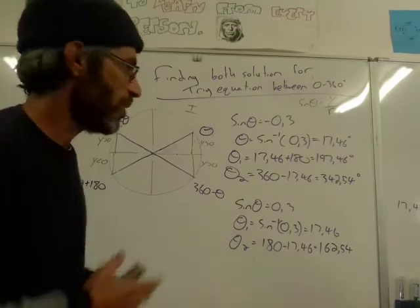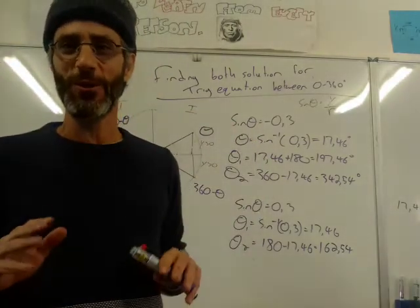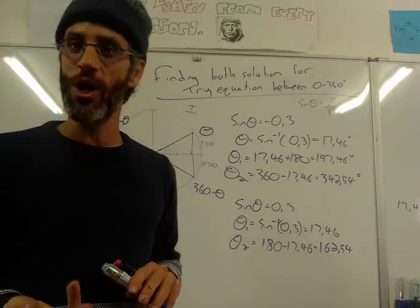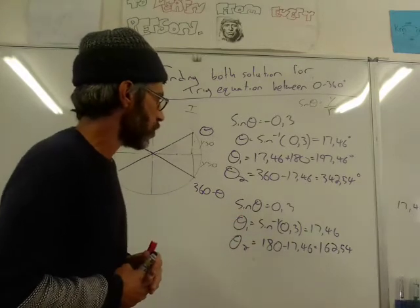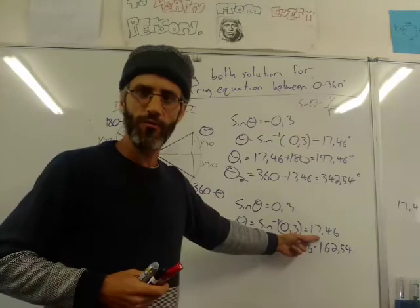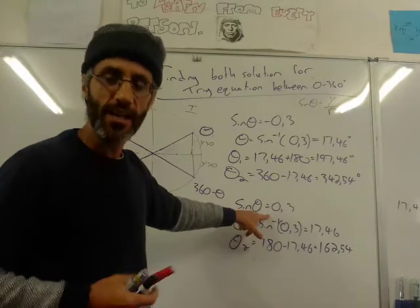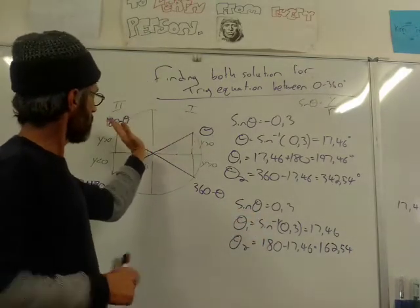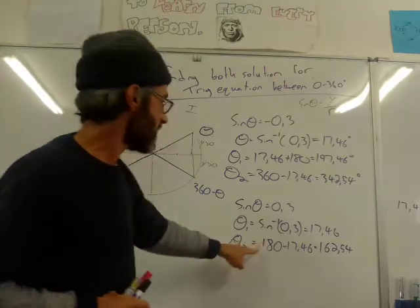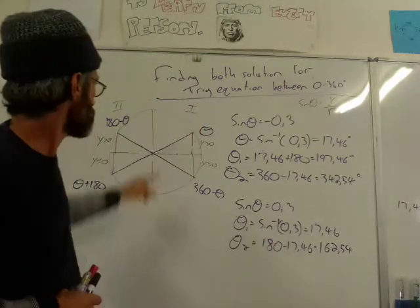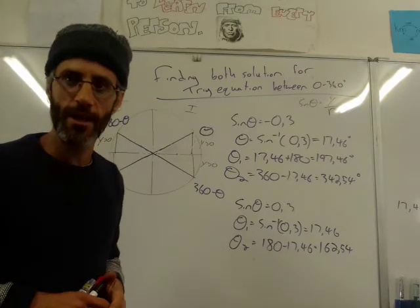Let me summarize what we've done here. We realized that for almost all trigonometric equations there are two solutions, and we saw how to actually get them. Starting with sine theta equals 0.3: I use the calculator and get the angle 17.46. That's in the first quadrant. If sine is positive, I'll get another solution in the second quadrant because both y's are positive there — same y-coordinate. To get the second solution, I just need to do 180 minus 17.46. So the second solution is 180 minus the first solution. That's for positive sine.